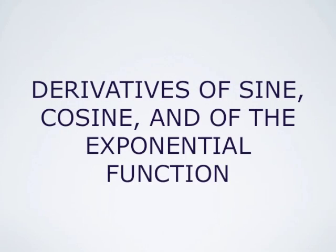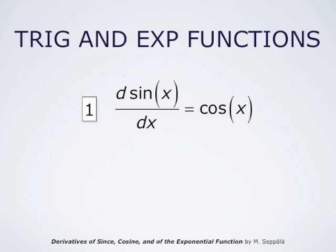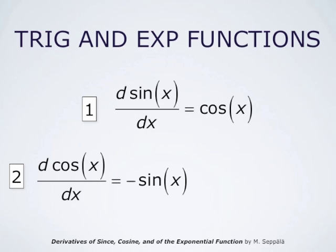Derivatives of sine, cosine, and of the exponential function. In this video we derive the formulas: the first derivative of sine equals cosine, the derivative of cosine equals negative of sine, and the derivative of the exponential function is the exponential function itself — a very nice property of the mathematical constant e.